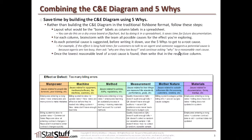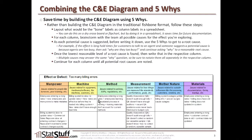Once you've reached the lowest, most reasonable level of the root cause, write that in the column pertaining to the issue where that potential root cause falls. You might have multiple causes that answer the same why question, so be sure to notate each of those separately in their respective column. Continue for each column until all potential root causes have been noted. It's okay if the same root cause is noted in more than one column, or if it doesn't perfectly match that column's title — the point is to identify all these potential root causes.